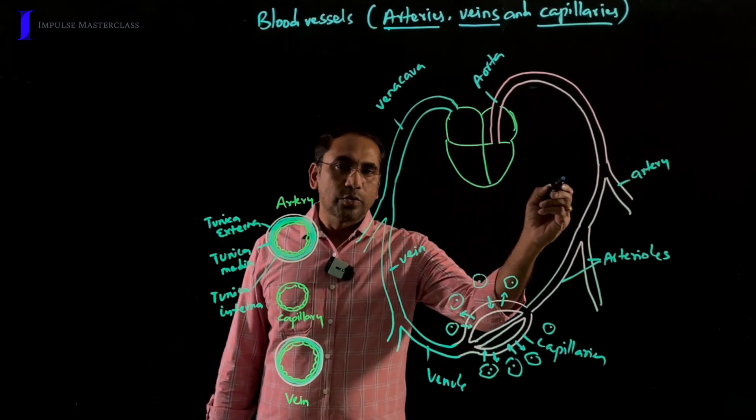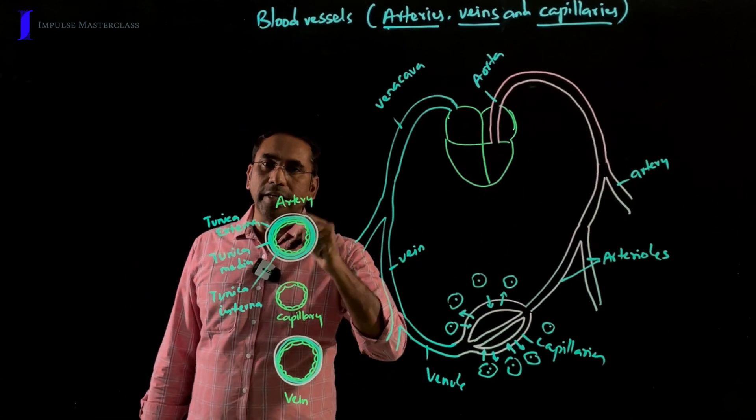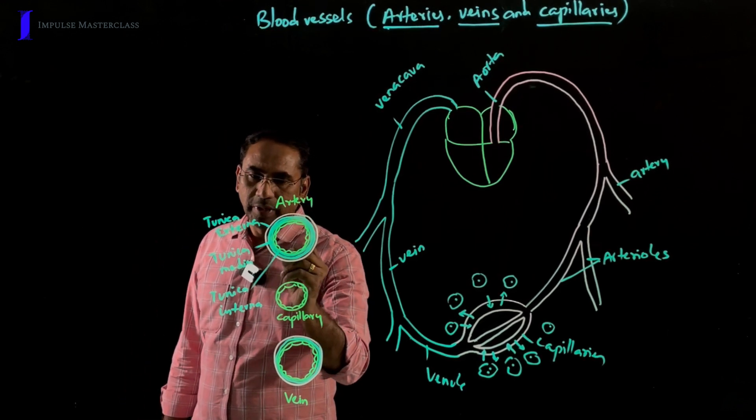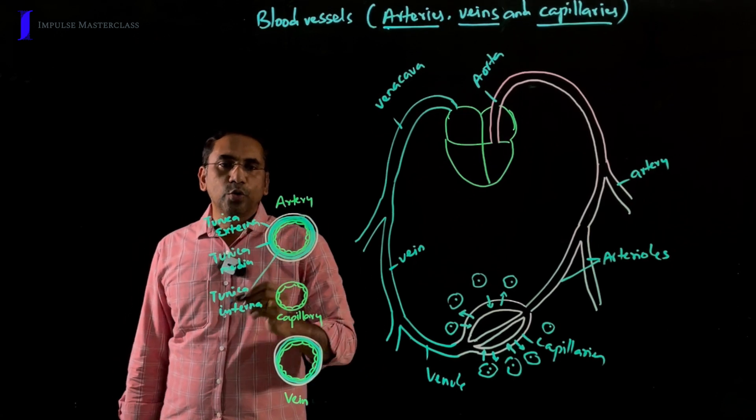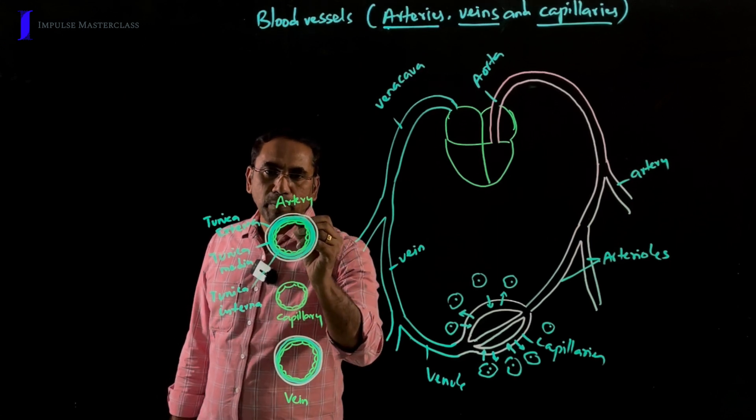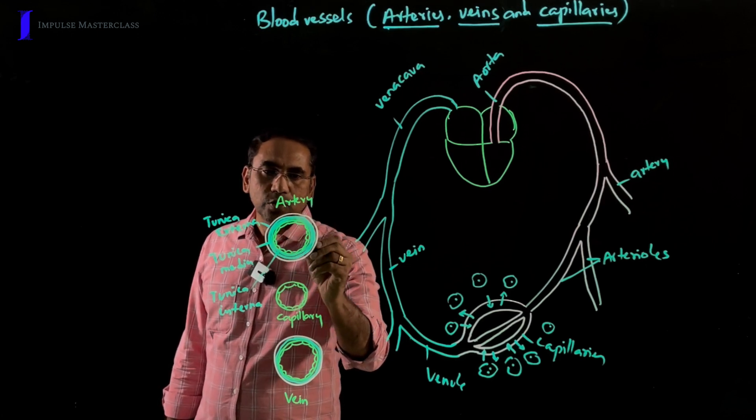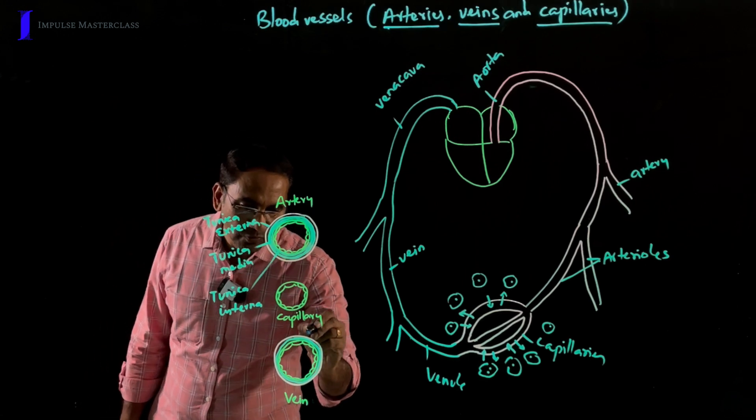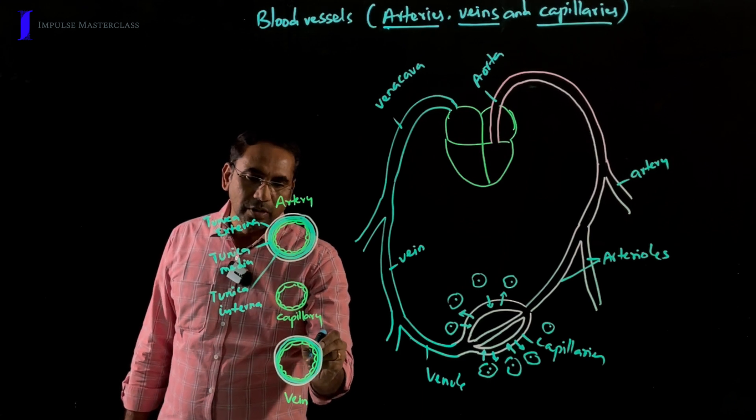When we look at the structure of arteries and veins, both their walls are basically made up of three layers: outer tunica externa, middle tunica media, inner tunica intima. Tunica externa consists of fibrous tissue with collagen fibers, media with elastin fibers and smooth muscles, and intima consists of squamous epithelium. The same layers are also found in the wall of veins, but the tunica media is very thin. Hence, the thickness of wall is less and the lumen is broad.